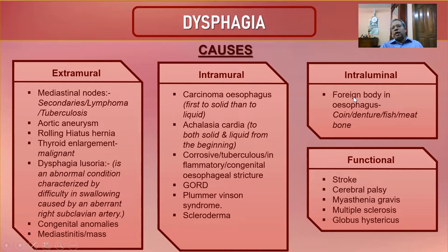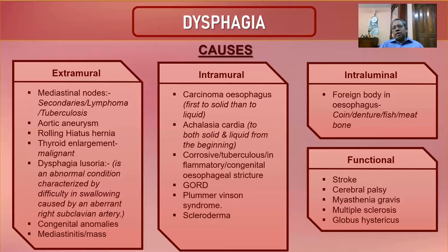Intraluminal causes include accidentally ingested foreign bodies — a coin, denture, fish bone, or meat bolus stuck in the esophagus. These causes are worsened if there is a pre-existing stricture. Functional causes include stroke, cerebral palsy, myasthenia gravis, multiple sclerosis, and globus hystericus, where the central nervous system dysfunction leads to dysphagia.